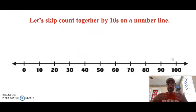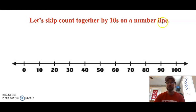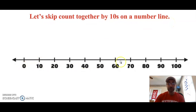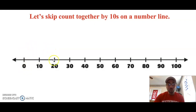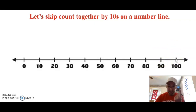We can also count by 10s on a number line. When we skip count, we're skipping some numbers. Let's skip count together by 10s on a number line. Here you can see a different type of number line — this one starts at 0 and goes all the way to 100, but it counts by 10s. Let's count by 10s all the way to 100: 0, 10, 20, 30, 40, 50, 60, 70, 80, 90, 100. Awesome job!